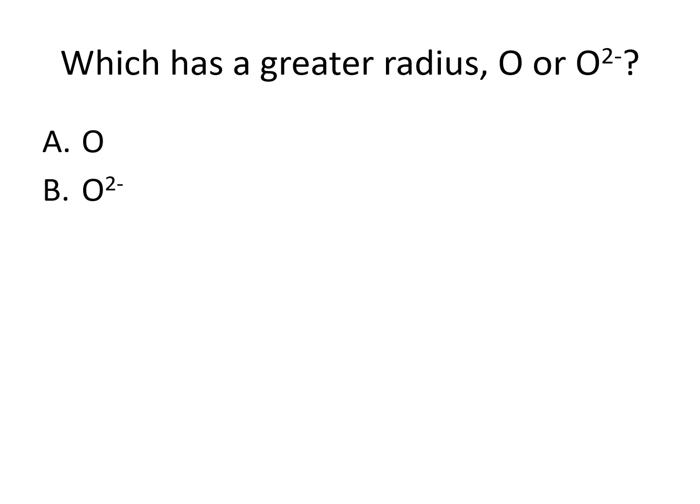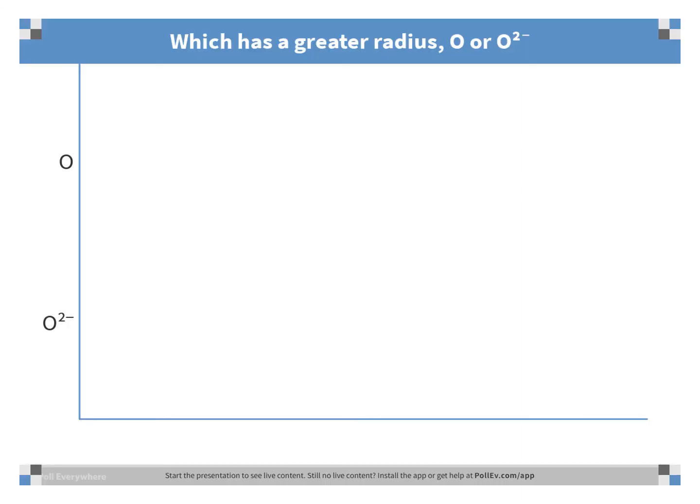Which has a greater radius? Is it A, the neutral oxygen atom, or B, the oxide ion, which has a minus 2 charge? The correct answer is B, the oxide ion. It has gained electrons compared to neutral, so it has more electron-electron repulsions and is therefore larger.